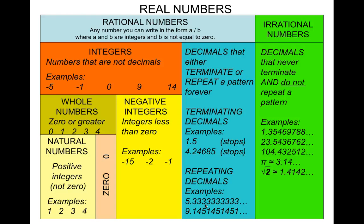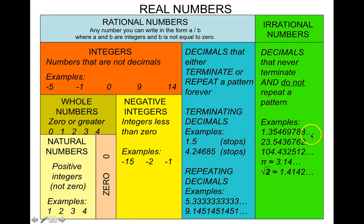There's a type of number that is considered irrational. These numbers are not rational — they are irrational but are considered real numbers. Irrational numbers are decimals that never terminate and do not repeat a pattern. If you see a decimal that never ends and there's no repeating pattern, then this is an irrational number.